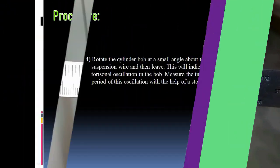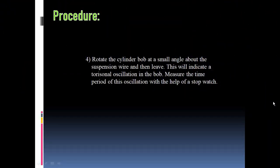And the last part is to calculate the time period of oscillation. Here the cylindrical bob is to be rotated by very small angle and we are going to measure the time period for several oscillations and then we can get the time period for a single oscillation.